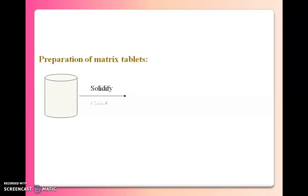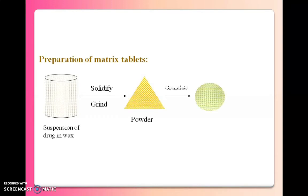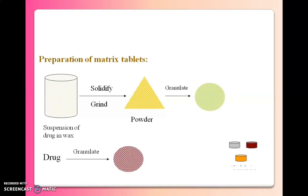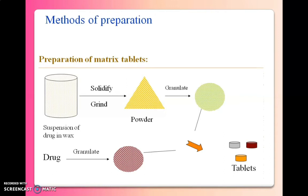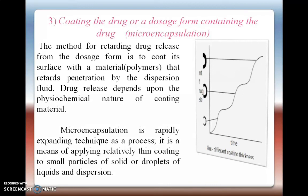Matrix systems can be prepared using waxes or granules via direct compression or granulation, and granules may be compressed into tablet dosage forms. The third approach is coating the drug or dosage form, also called microencapsulation. The method for retarding drug release is to coat the surface with materials or polymers that retard penetration by the dispersion fluid. Drug release depends on the physicochemical nature of the coating material — how porous it is and how soluble or insoluble it is in the aqueous system.